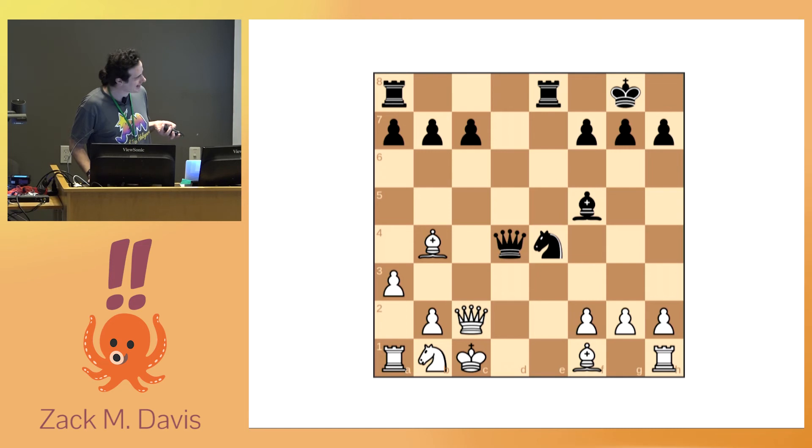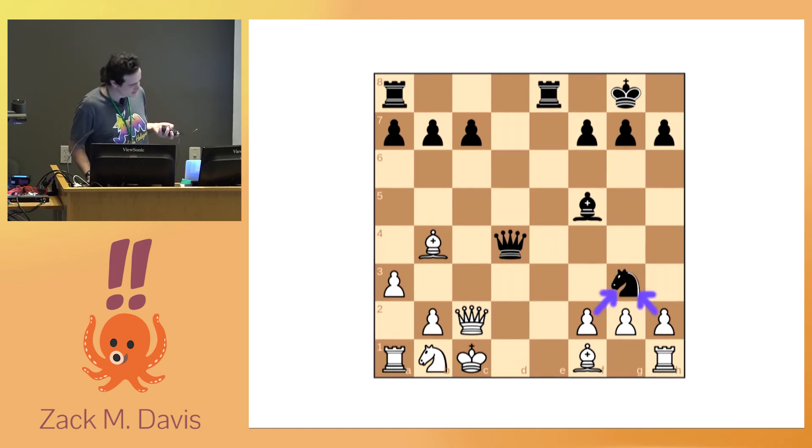So here, the engine's predicted move for black is knight to G3. And when I saw that, at first glance, this looked crazy to me, because why would you move the knight there where it could just immediately get eaten by those pawns? And of course, what's actually happening is that moving the knight reveals a discovered attack of the bishop against the white queen on C3.